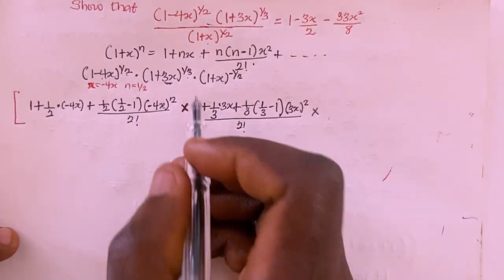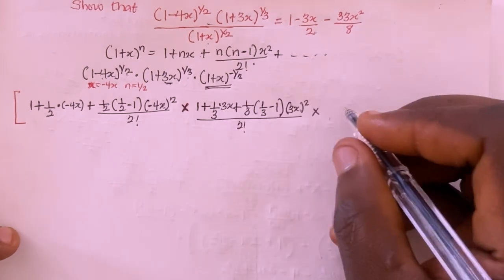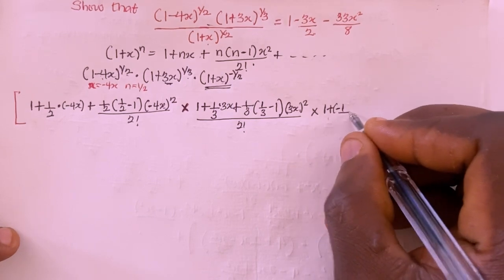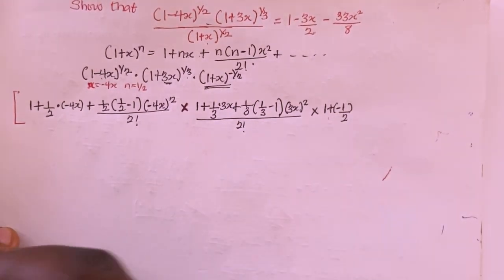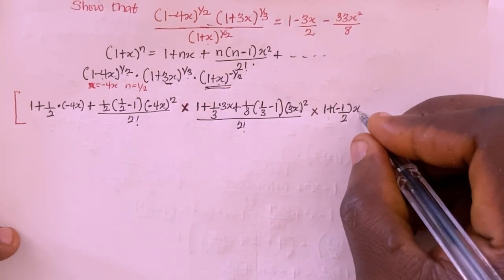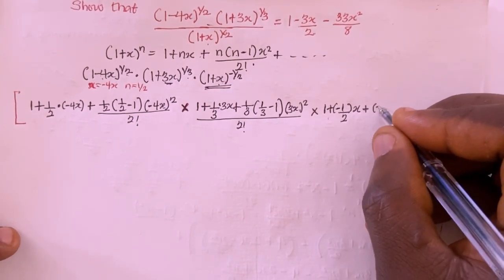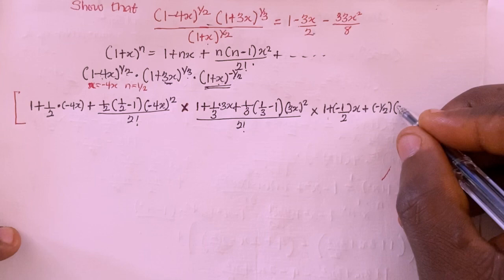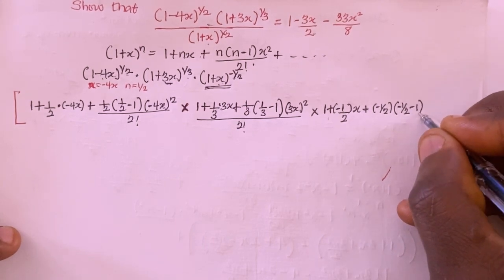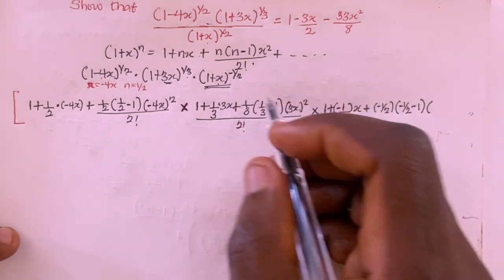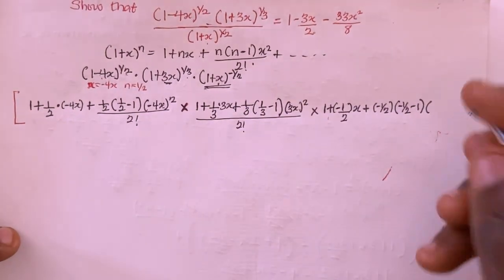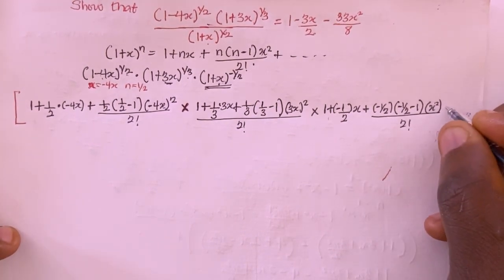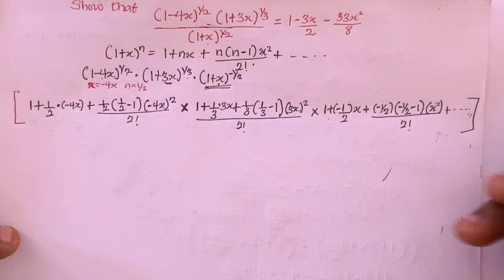Then multiplying by the third expression: 1 + (-1/2)(x) plus (-1/2)(-1/2 - 1)(x²) divided by 2 factorial, plus other terms. That completes writing out all three expanded factors.